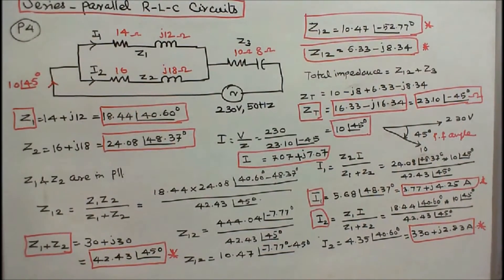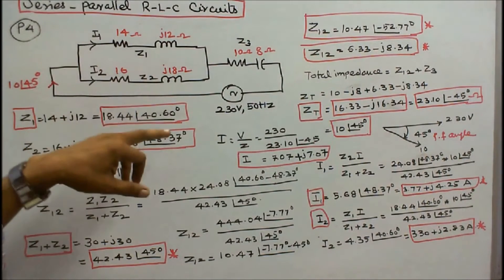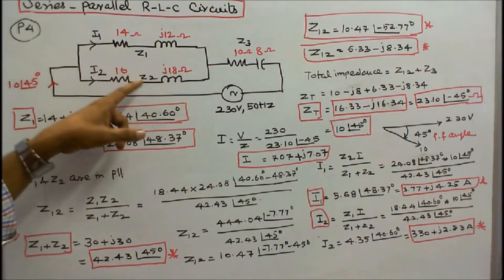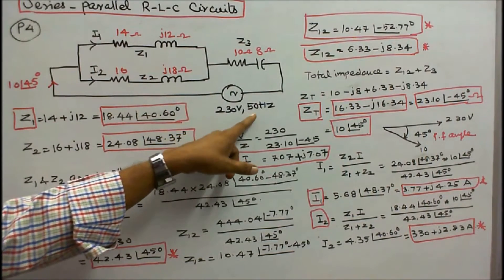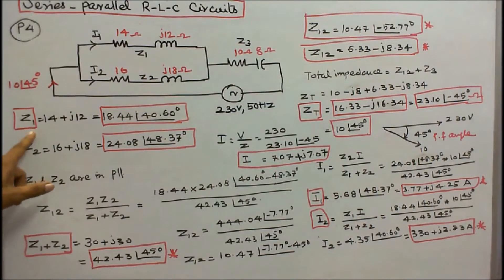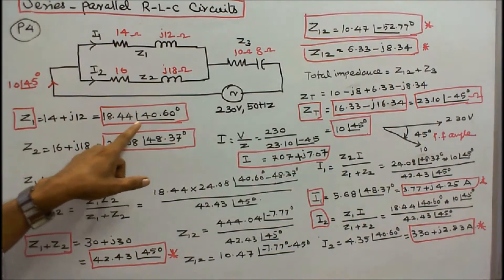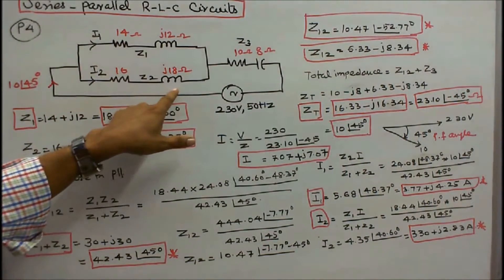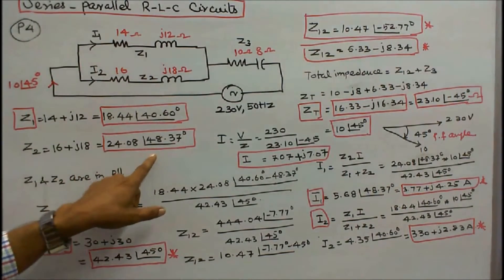Problem number 4. Find the total current, branch currents, power factor angle, and power factor of the given circuit. The circuit consists of three impedances Z1, Z2, Z3. Supply voltage is 230 V, frequency is 50 Hz. Z1 = 14 + j12 in rectangular form; in polar form, 18.44∠40.60°. Z2 = 16 + j18 in rectangular form; in polar form, 24.08∠48.37°.